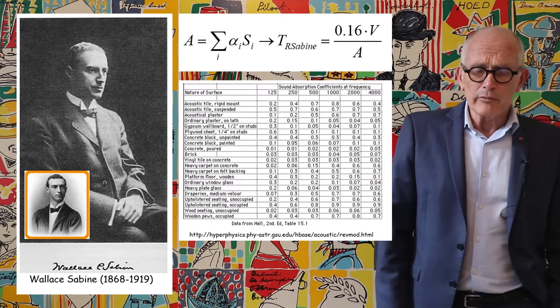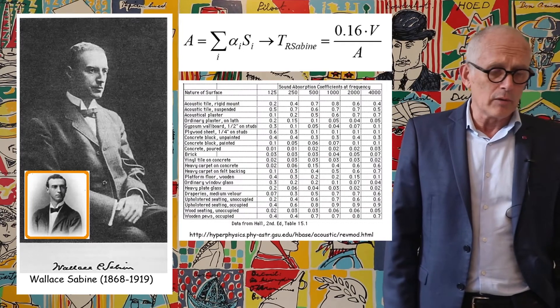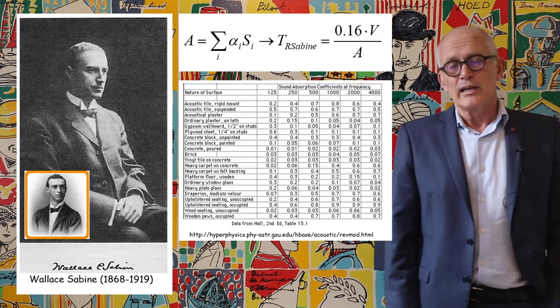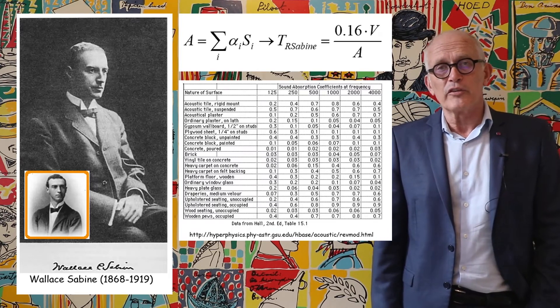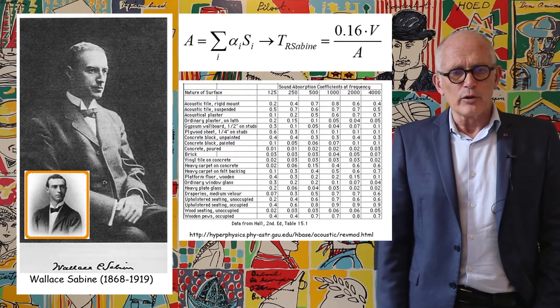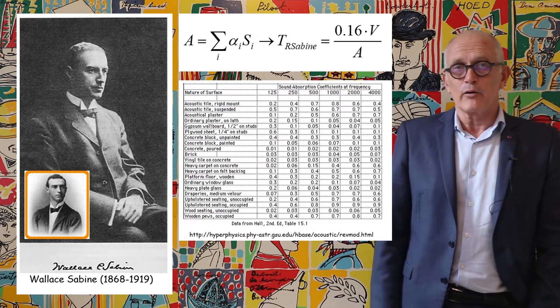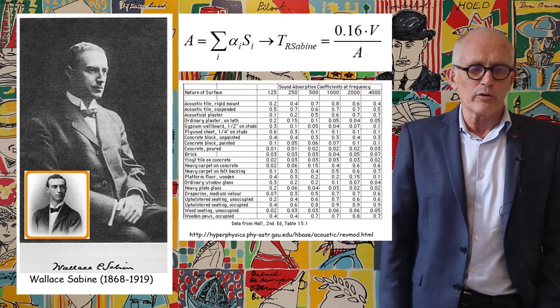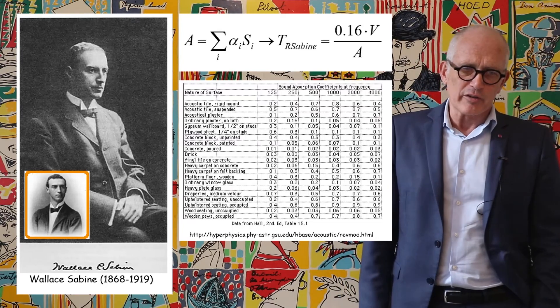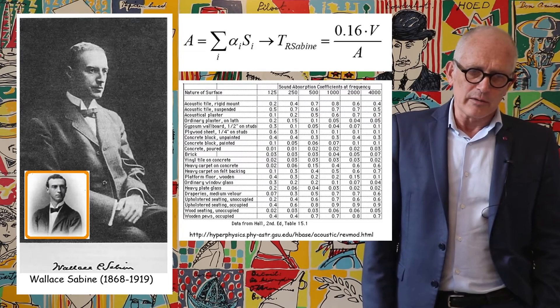You can find codes and programs that do that for you that contain a vast database of materials with their alpha values, and that are able to calculate, if you give them the area of the different surfaces and the material covering these surfaces, the reverberation time of Sabine.